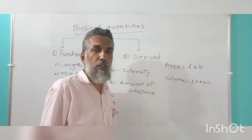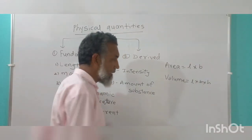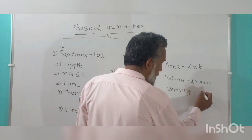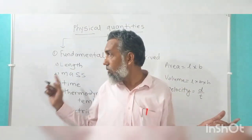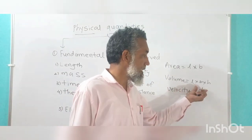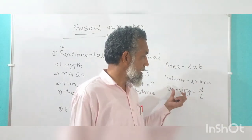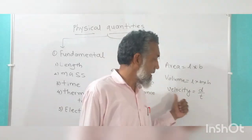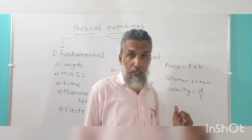Now we will take an example using two different fundamental quantities to make a derived quantity — like velocity. In velocity, you use displacement divided by time. Displacement is again length, so you are using two different fundamental quantities: displacement and time. That's why velocity is a derived quantity; it is not a fundamental quantity.